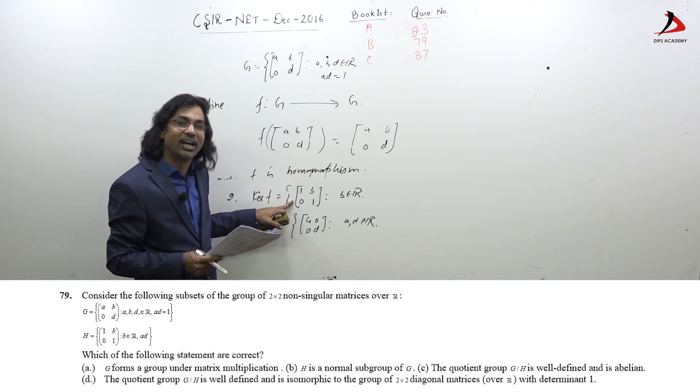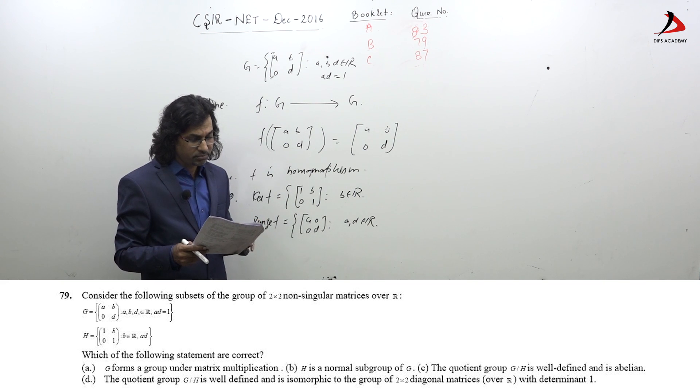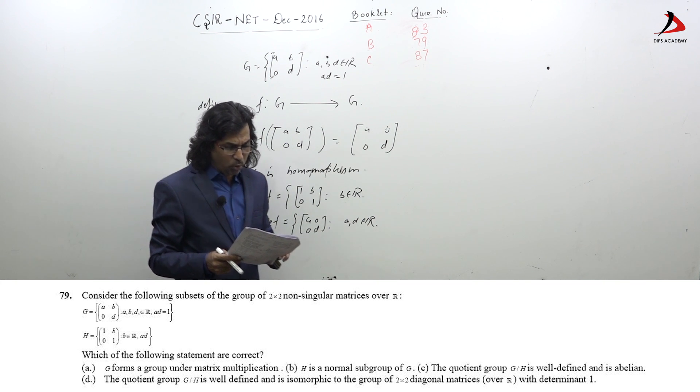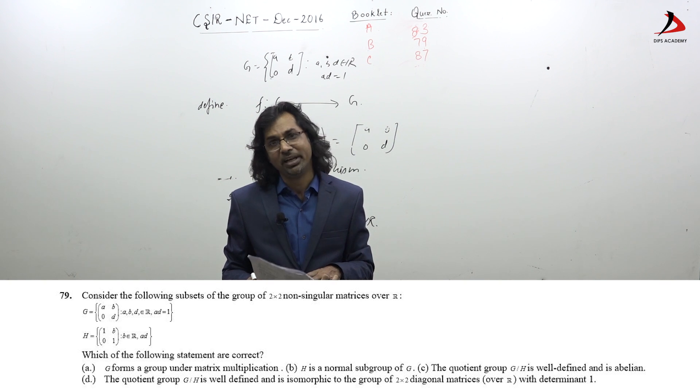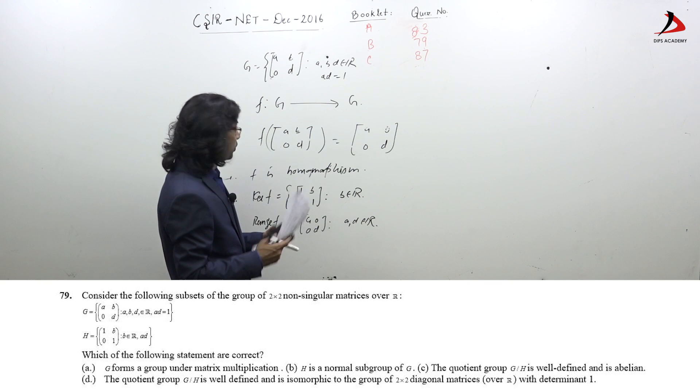H is a normal subgroup of G. H is nothing but the kernel, and we know kernels are normal in the domain. The quotient group G/H is well-defined and is abelian.